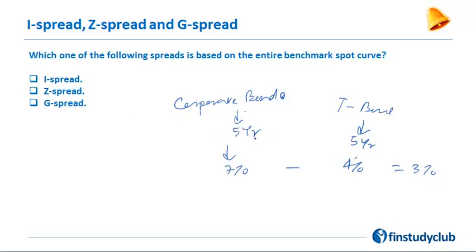The G spread compares the yield of a corporate bond with the yield of a comparable government bond. It does not take into account the entire spot curve — the entire benchmark spot curve means using S1, S2, S3, S4 and so on, but here we've only taken the YTM of a comparable bond. I spread is very similar: instead of a T-bond as benchmark, we use the swap interest rate. For a 5-year corporate bond, compare its yield against the 5-year swap rate — that difference is the I spread.